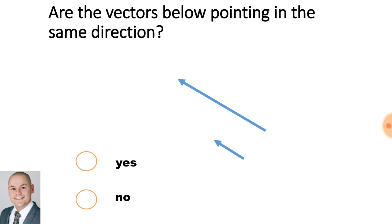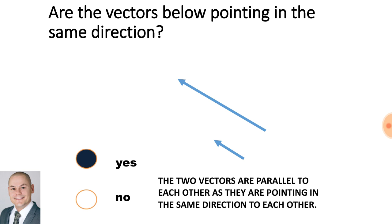Are the vectors below pointing in the same direction? Yes. The two vectors are parallel to each other as they are pointing in the same direction to each other.